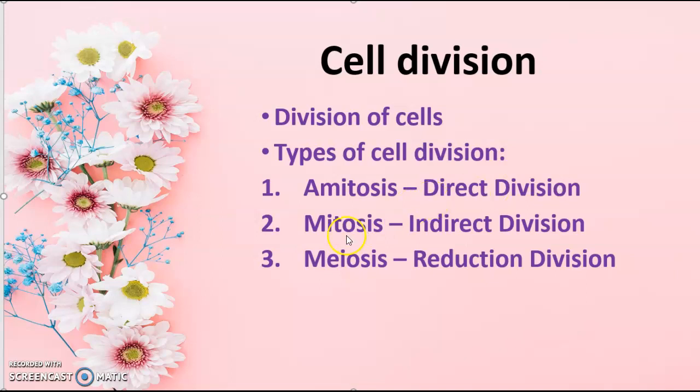Coming to mitosis, here the parent cell undergoes a sequence of steps and finally the parent cell gets divided into two daughter cells. For that reason, this process is called indirect division.